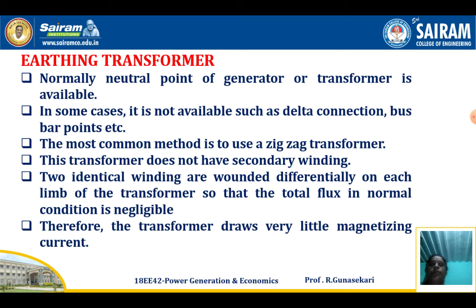Normally the neutral point of the generator or transformer is available. In some cases it is not available, such as in a delta connection, bus bar points, etc. The most common method is to use a zigzag transformer.